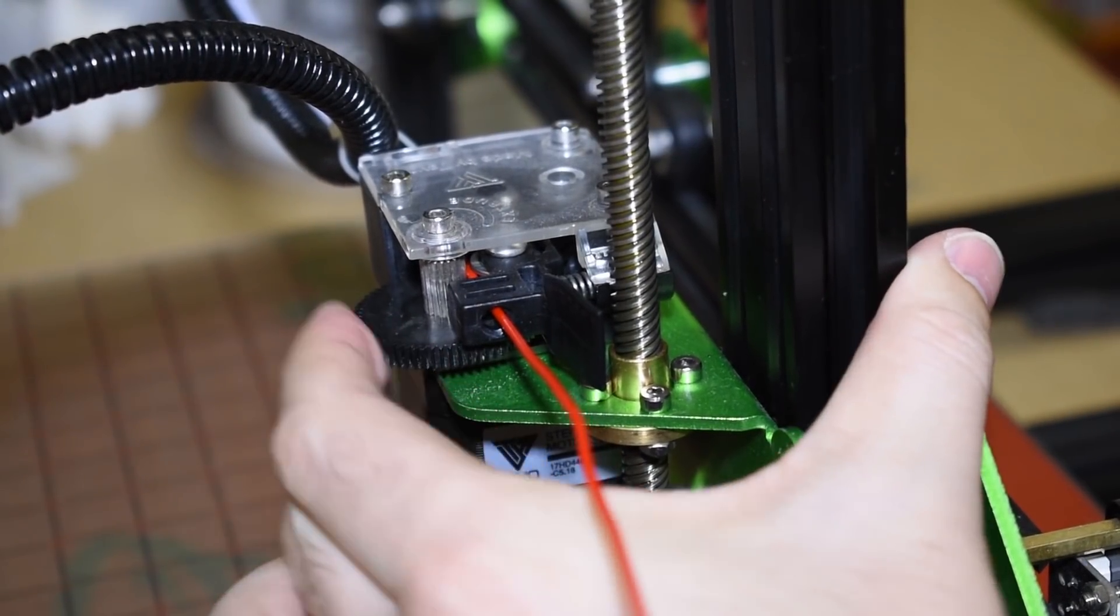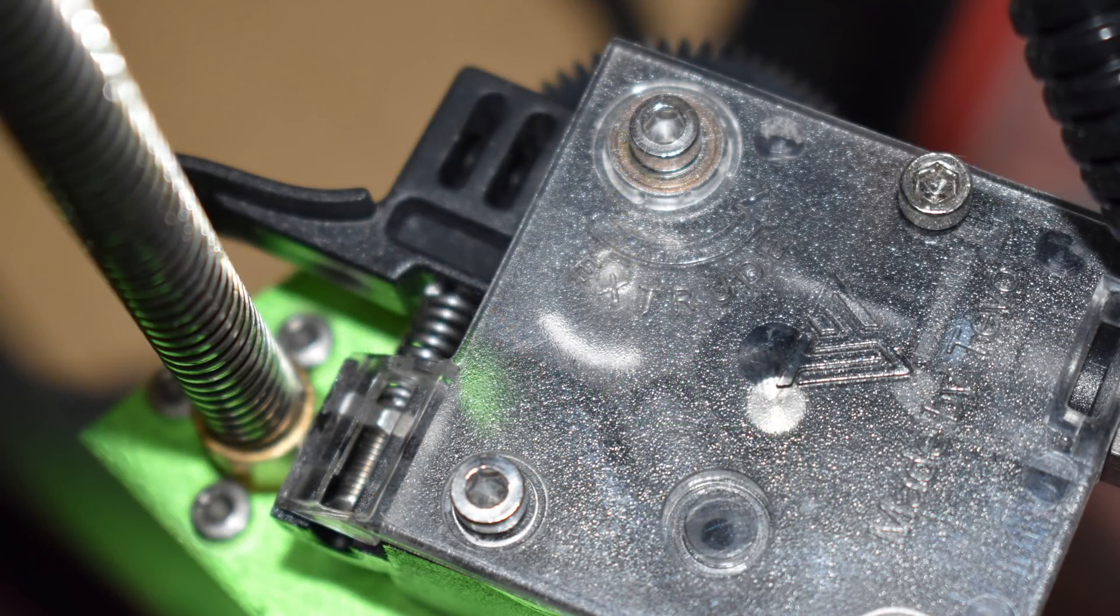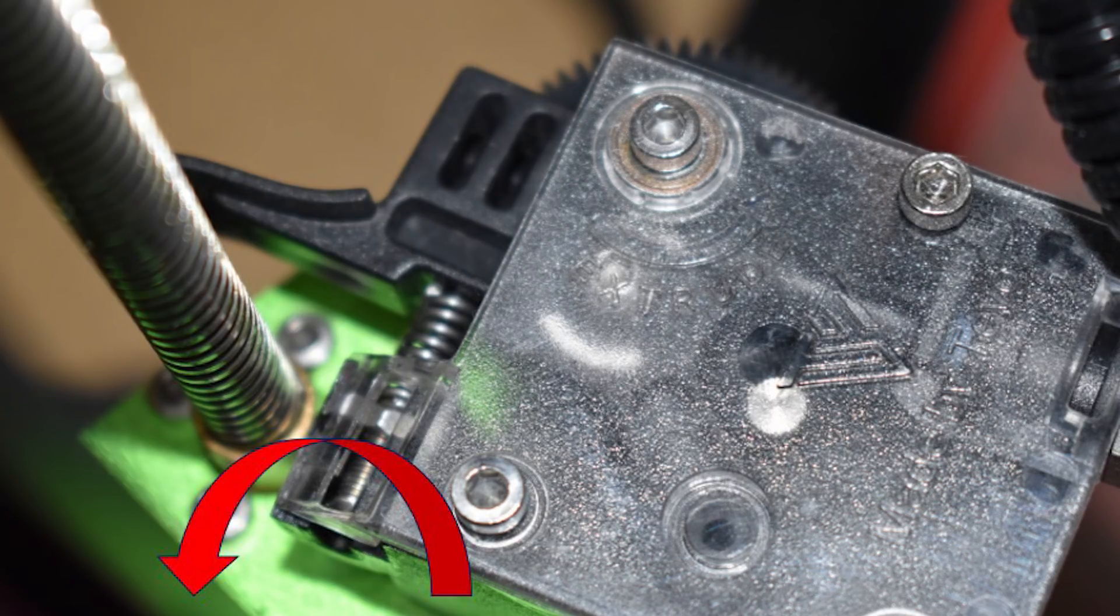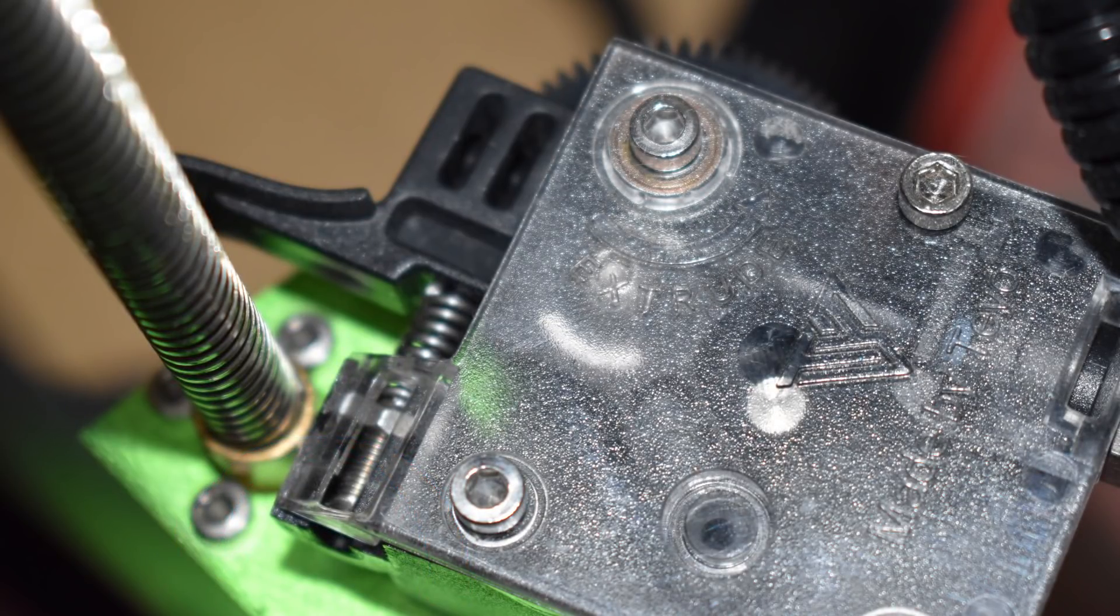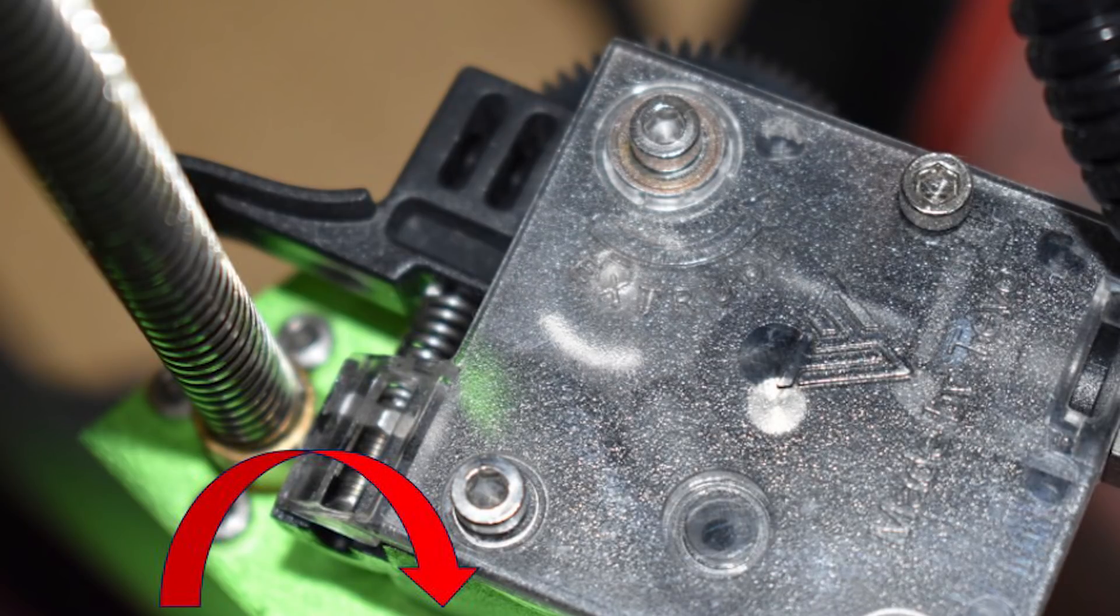If you need to adjust the tension, remember this: To increase the tension, the nut inside must move forward to the spring, and for that you need to rotate the screw counter-clockwise. To reduce the tension, the nut inside must move backwards away from the spring, and for that you need to rotate the screw clockwise.